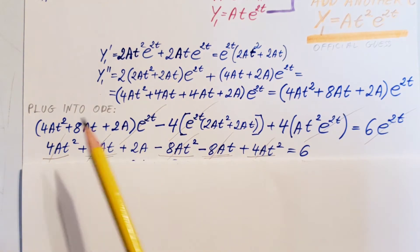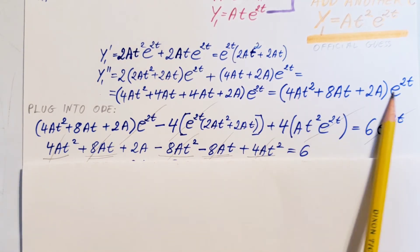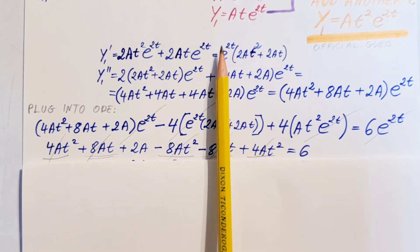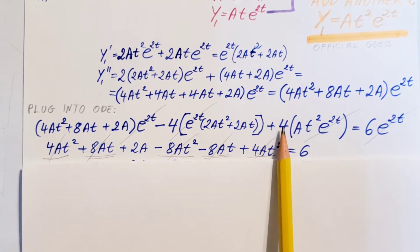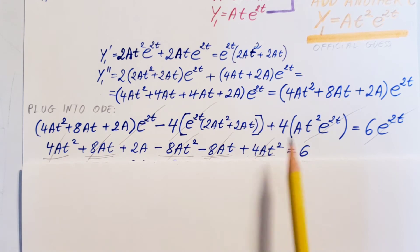Next step, we have to go and plug back into our ODE. Instead of y double prime we plug what we found right here, minus 4y prime, that is what we found right here, plus 4y, make sure you plug in your official guess, right here, and equals to 6e to the 2t.